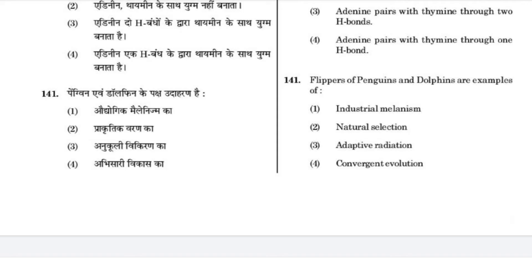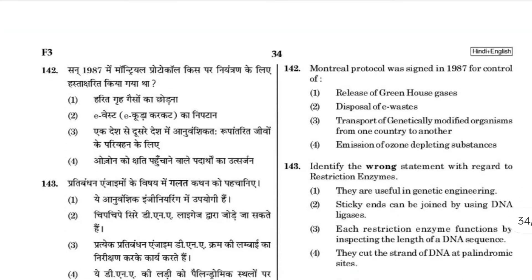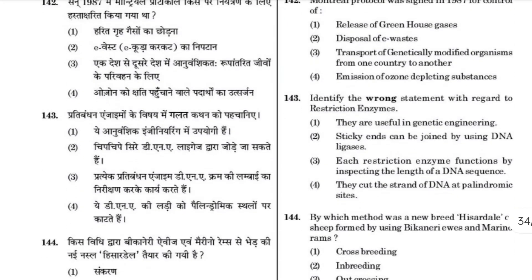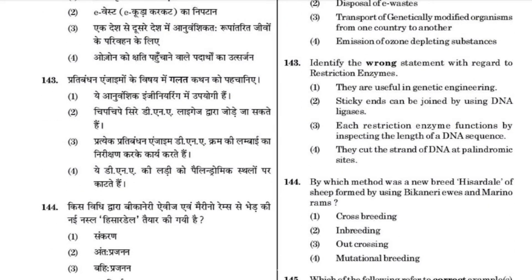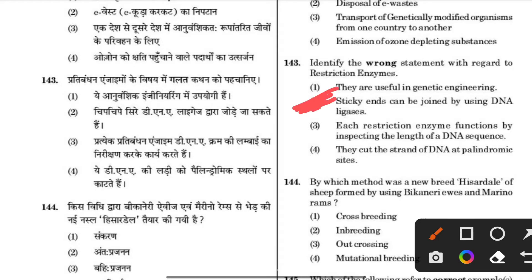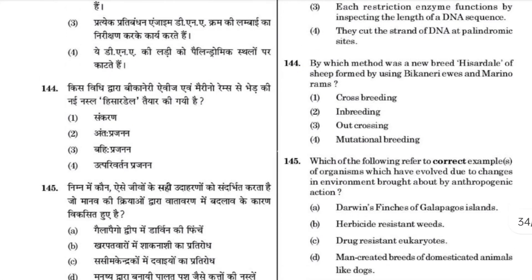Flippers of penguin and dolphin are an example of convergent evolution — the answer is 4. The Montreal Protocol was signed in 1987 to control the emission of ozone-depleting substances. Identify the wrong statement with regard to restriction enzymes — the answer is 2: sticky ends can be joined using DNA ligase.